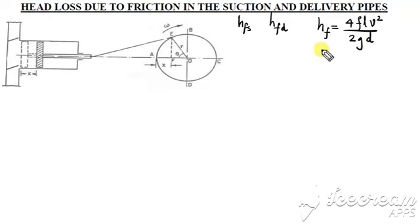Where small f is Darcy's coefficient of friction, L is the length of the pipe, V is the average velocity of flow through the pipe, and D is the diameter of the pipe. So head loss due to friction in meters of that liquid can be found using the Darcy-Weisbach equation.